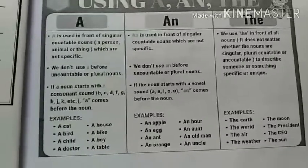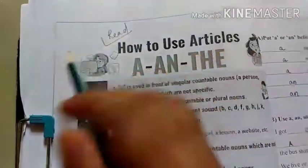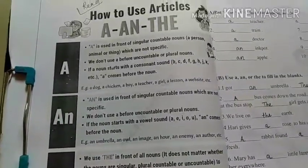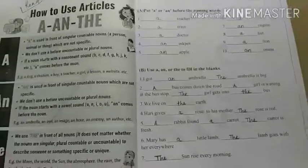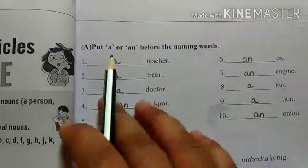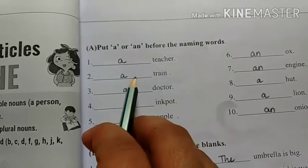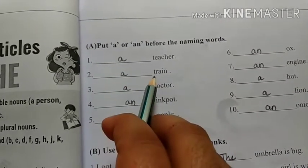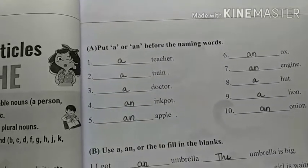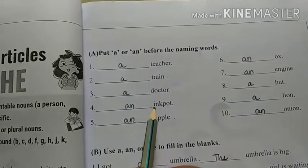Now turn to the exercise portion on page number 26 - tick and write, using the same rules for a, an, and the. Come to page number 27. The first exercise is to put 'a' or 'an' before the naming words. Dash teacher - a teacher. Dash train - a train. We write 'a teacher' and 'a train' because they start with consonant sounds. Then: a doctor, an ink pot - because I is a vowel, we put 'an'.